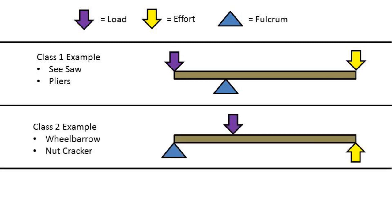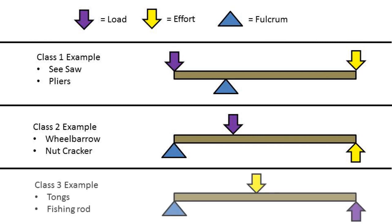If the fulcrum is placed on one end with the load in the middle and the effort on the opposite end, it is a second class lever. Some examples of second class levers are a wheelbarrow or a nutcracker.